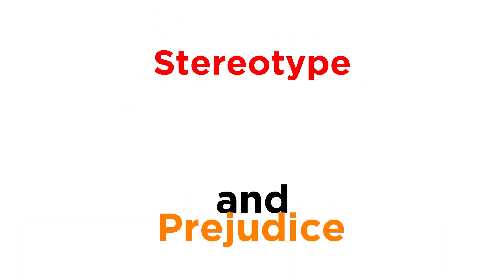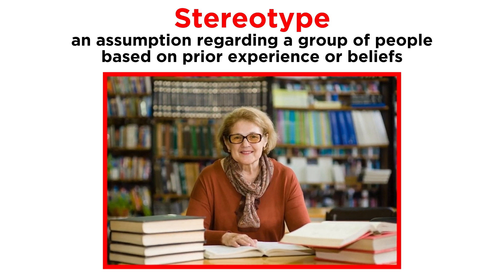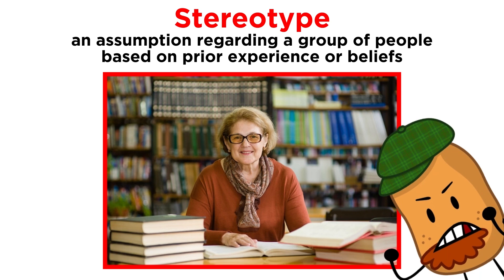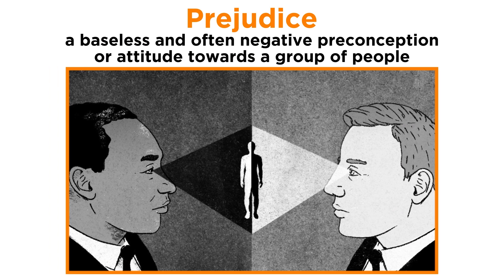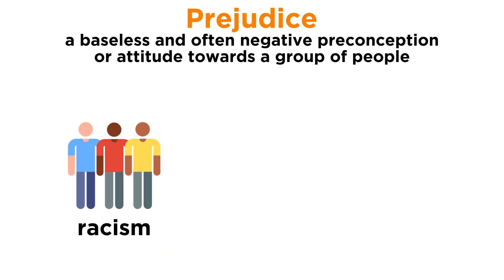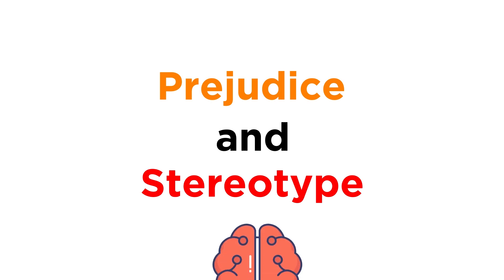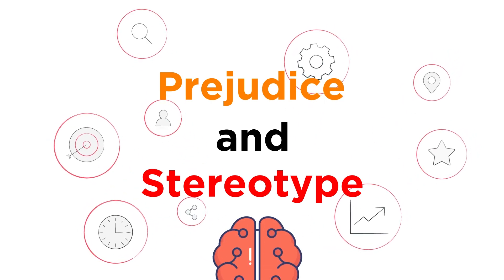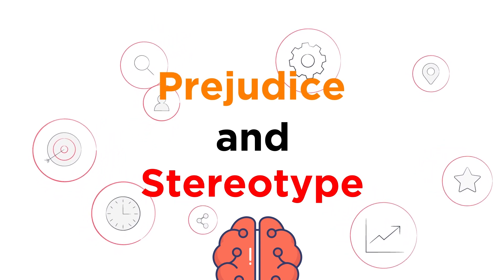By the word stereotype, we are talking about an assumption regarding a group of people based on prior experience or beliefs — like thinking that all librarians are old women who wear glasses, or that all Irish people love potatoes. Stereotypes can lead to prejudice, or a baseless and often negative preconception or attitude towards a group of people. When you hold a prejudice, you tend to view everyone in a group as being the same. This leads to things like racism, sexism, and ageism. So prejudice and stereotypes come from the mind's natural tendency to categorize things. We can't stop our minds from making these categories, but we can work on reducing our prejudice towards different groups.